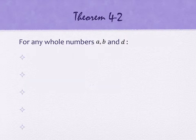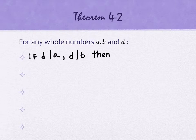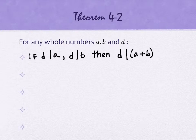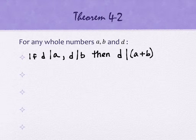We have five properties related to addition and subtraction. The first: if D divides A and D also divides B, then D divides A plus B. So if two numbers are divisible by the same value, their sum is divisible by that value. For example, three divides six and three divides nine; six plus nine is fifteen, and three does divide fifteen.